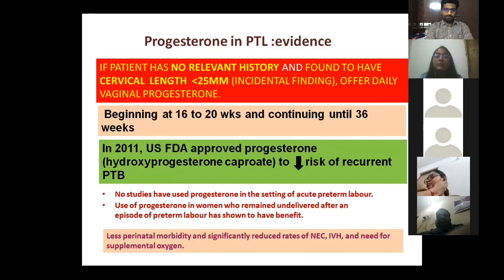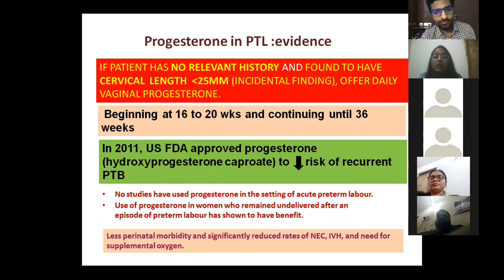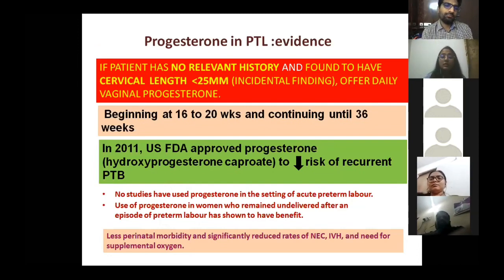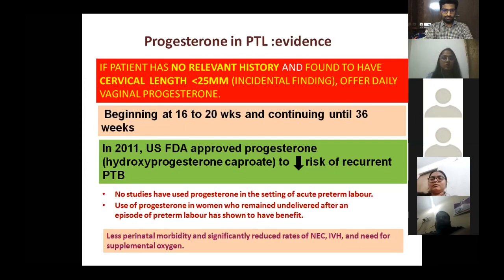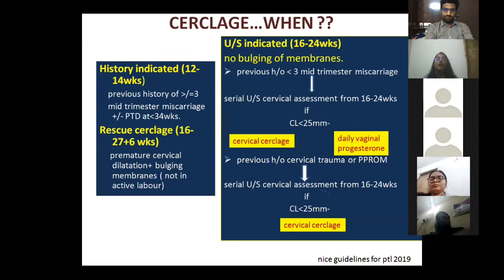If a patient has no relevant history but is found incidentally to have a cervical length less than 25 mm, offer daily vaginal progesterone. Start at 16–20 weeks and continue until 36 weeks. Importantly, if the patient is already in preterm labor, progesterone has no proven role — it is prevention only, not treatment. The FDA has approved 17-hydroxyprogesterone caproate to decrease the risk of recurrent preterm birth.